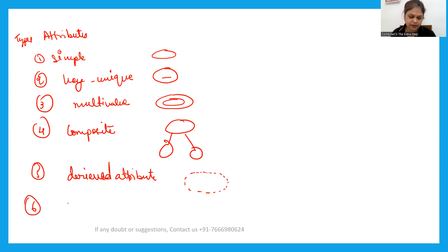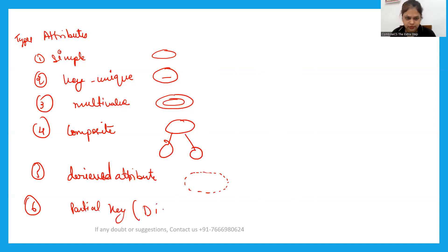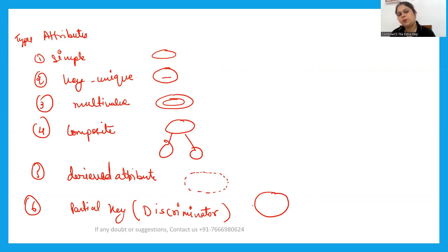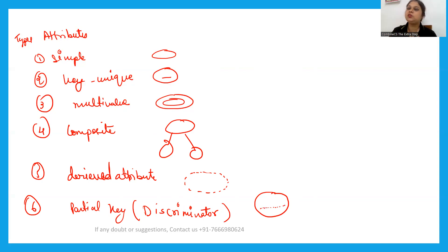The sixth type is the partial key attribute, also known as a discriminator. It is represented by an oval with a dotted underline. This is used with weak entities, since a weak entity cannot have its own primary key and is dependent on a strong entity. These are all the symbols you need to know for the exam.